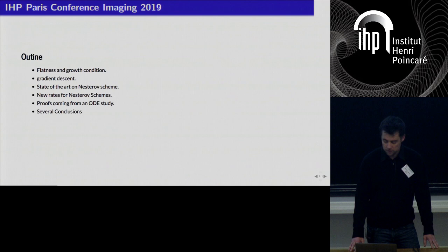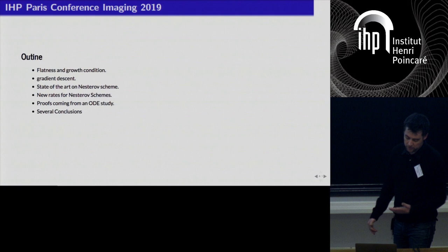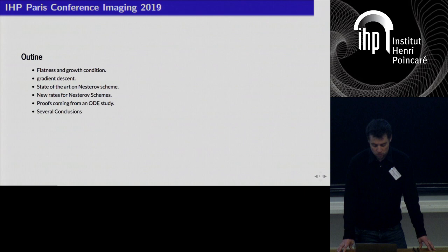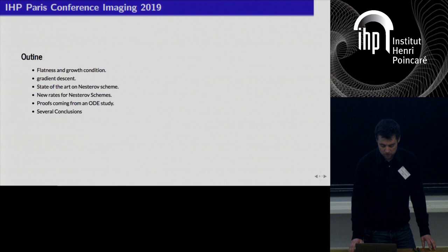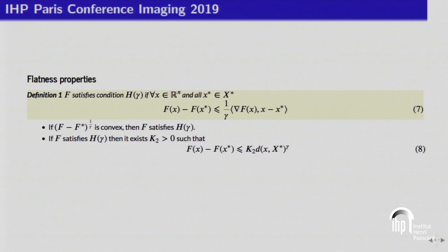The outline of the talk: first, I will give two definitions of geometry — a flatness condition and a growth condition. Then I will recall classical results about gradient descent, give state-of-the-art results on the Nesterov scheme, present the new rates we achieve in this work, and explain how we can handle these rates using an ODE study.